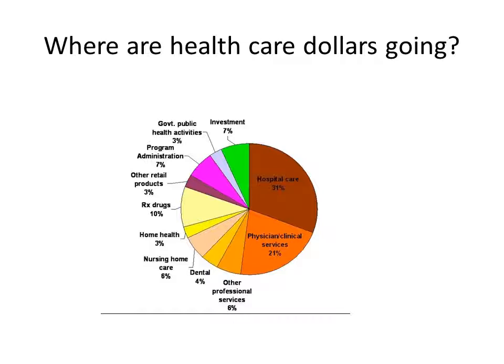When we look at where the money is going in health care, this is a typical graph illustrating what we're spending nationally. The big categories are hospital care and physician and clinical services — we're spending most of our money on the provider side, more than half. What's embedded in this is that the money is not just going to doctors or providers in the hospital, but also to all of the technology they have to purchase — accessing the facilities too.